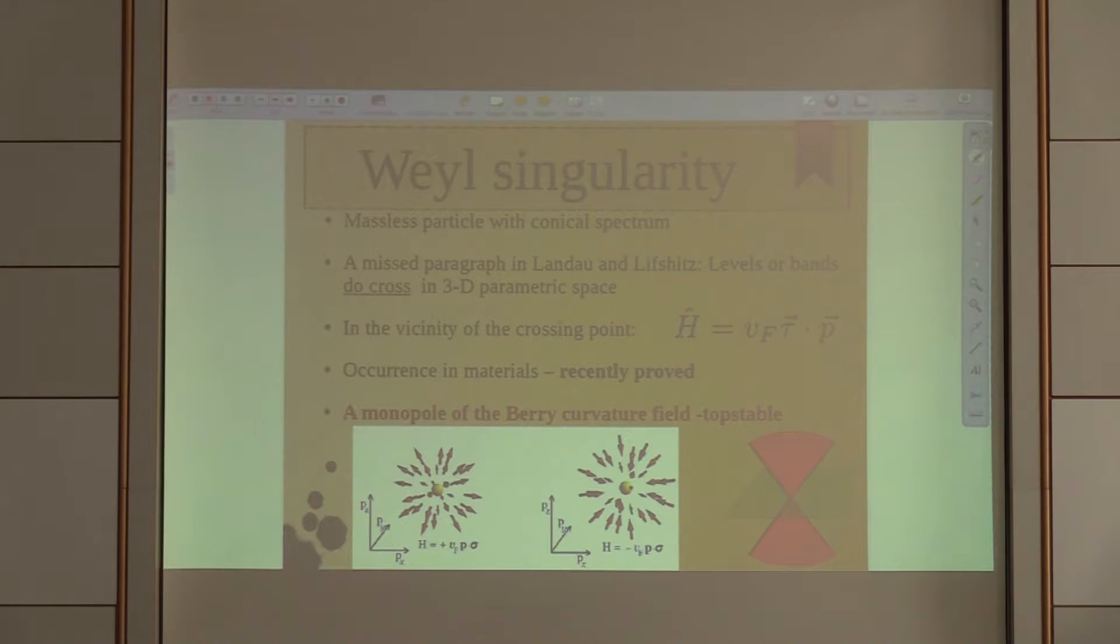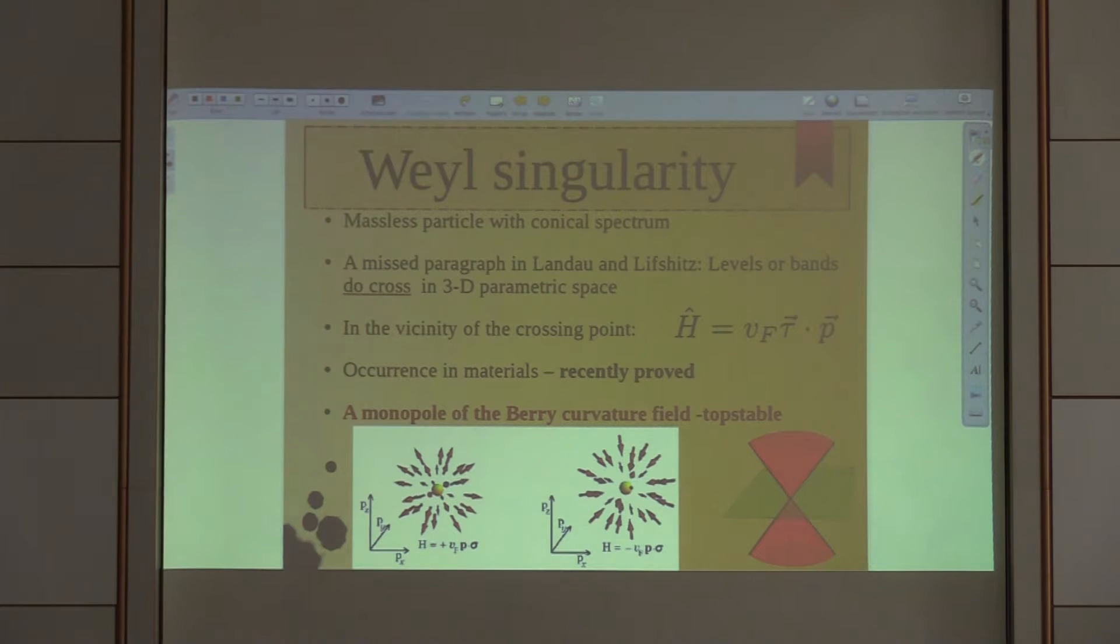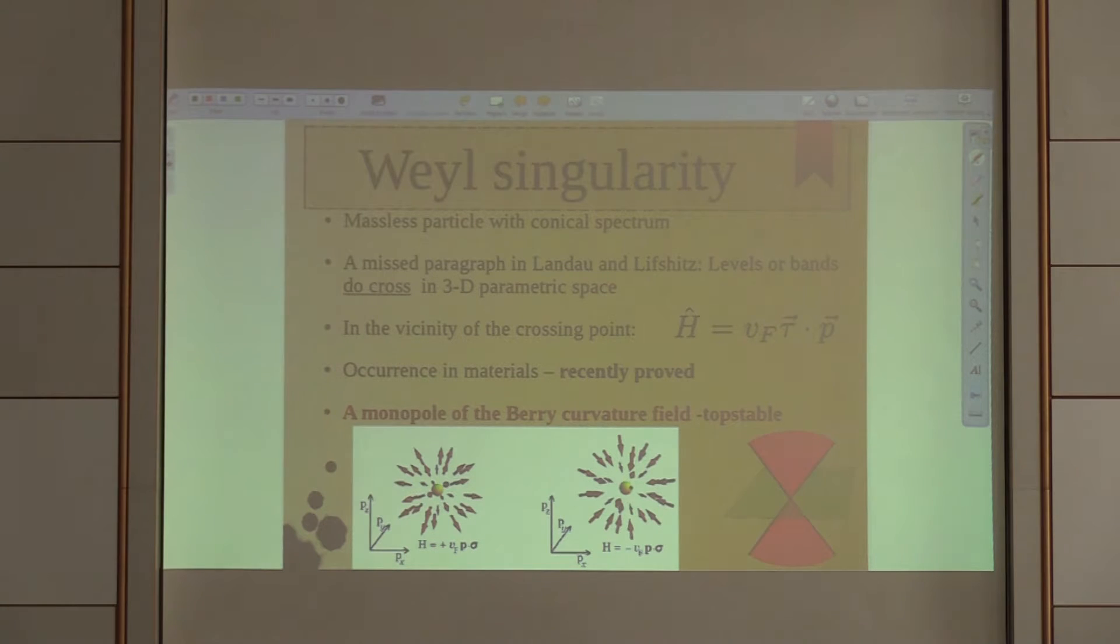Let me remind you of very childish transparency about Weyl singularities. One can think of massless particles with conical spectrum. I think about this as a missed paragraph in Landau-Lifshitz. If you remember, they explain why there is level repulsion. In order to match two energies of two levels, seemingly one just has to go in one dimension over the line. They explain there is level repulsion, there are no degeneracies because of that.